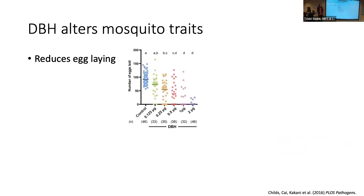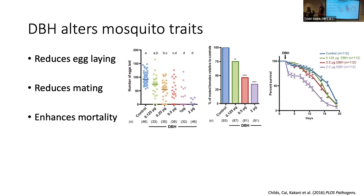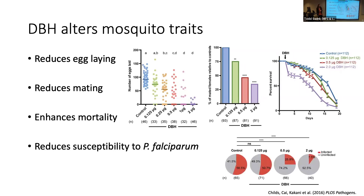From experimental lab data, we determined that DBH alters specific mosquito traits. In the figures, controls are on the left and increasing levels of DBH to the right. We see a reduction in egg laying, a reduction in mating, and reductions in longevity — enhanced mortality — with higher levels of DBH. It also shows a strong reduction in susceptibility to malaria with higher levels of DBH.